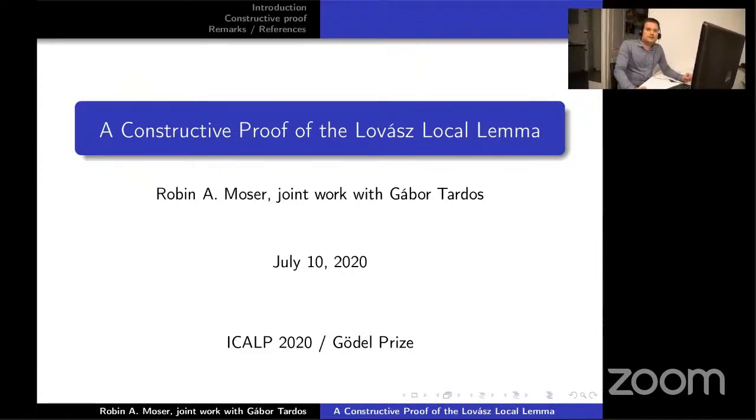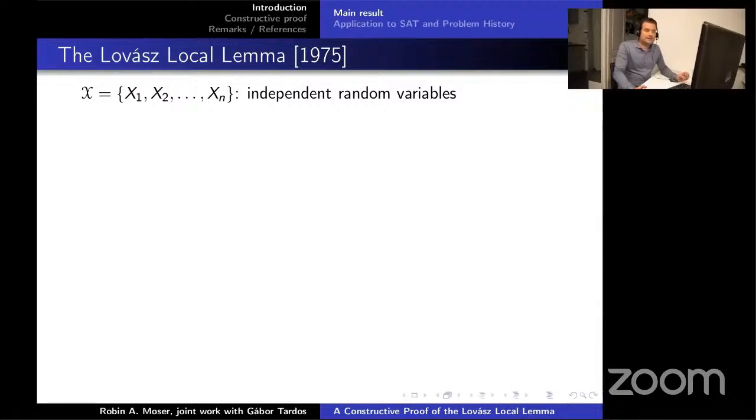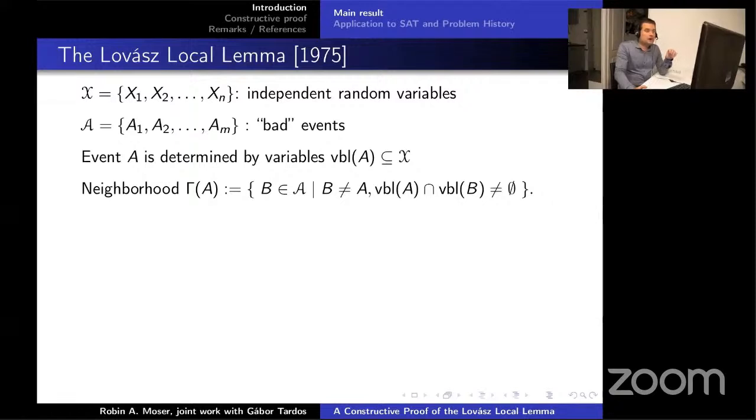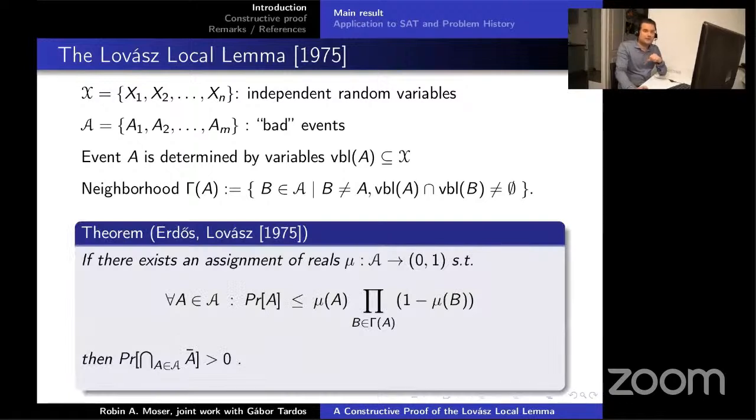So, now let's talk about the local lemma. As you probably know, the Lovász local lemma is a powerful tool for proving the existence of certain combinatorial objects that meet a prescribed list of criteria. In one of its more generic and widely applicable formulations, what we have is a set of independent random variables, and then a list of bad events, each of which is determined by some subset of the variables.